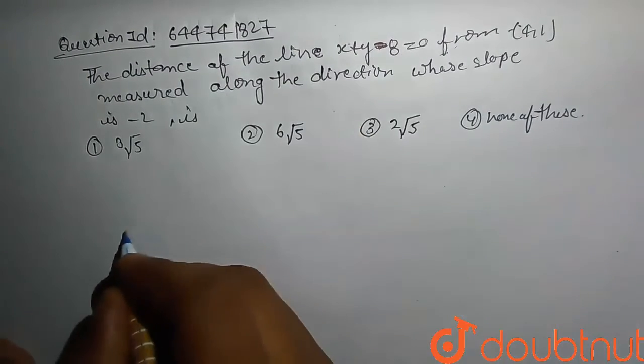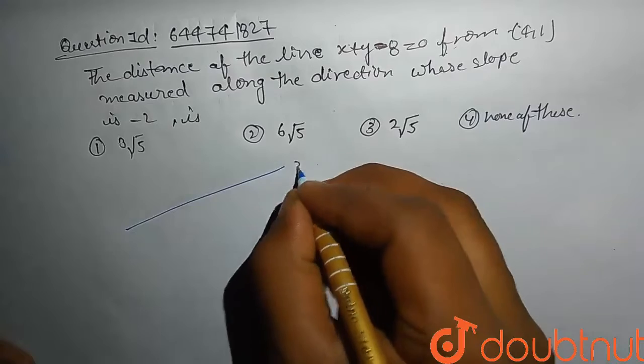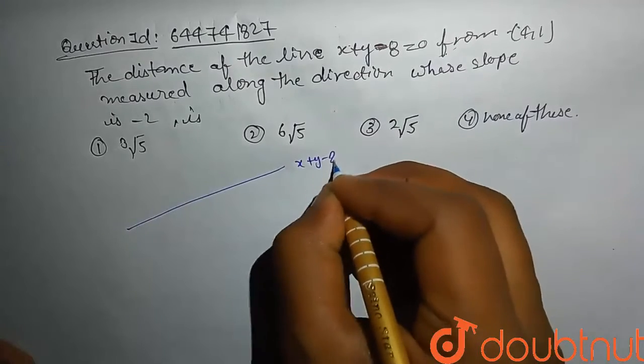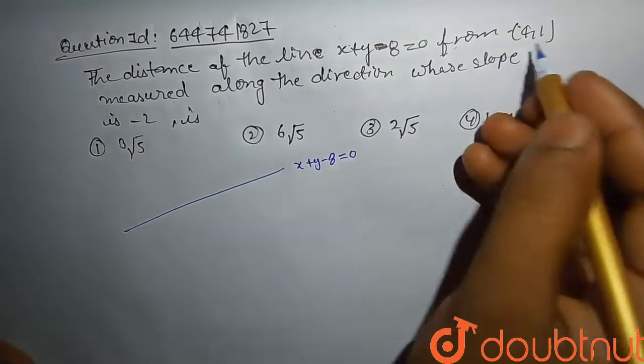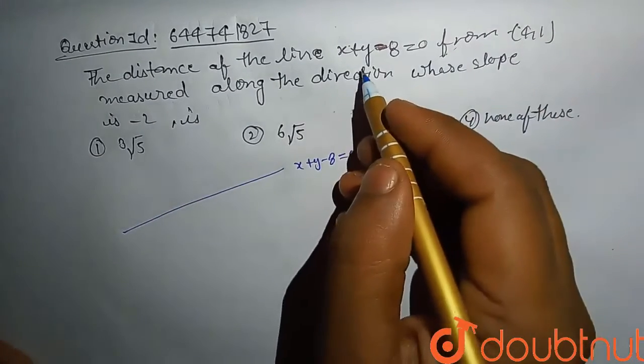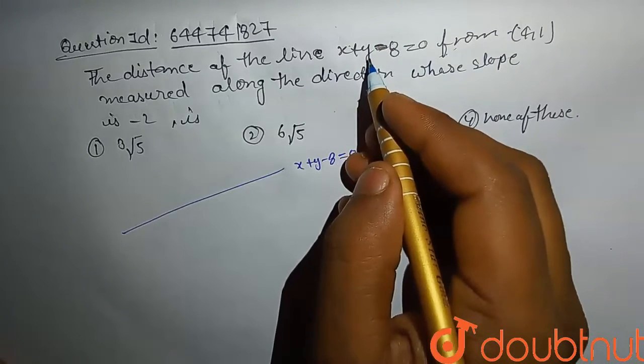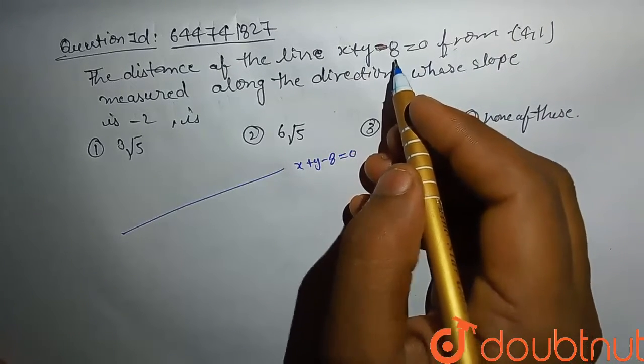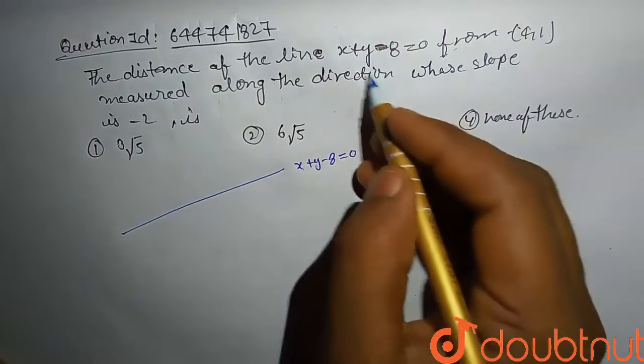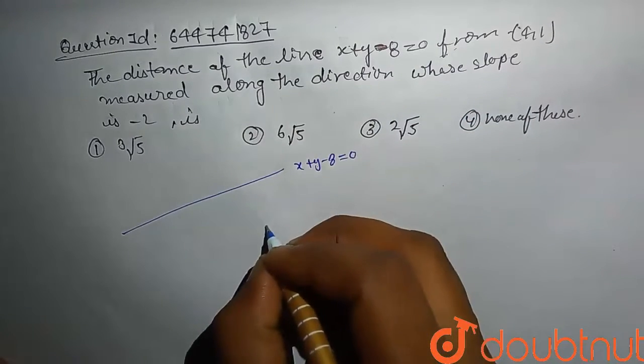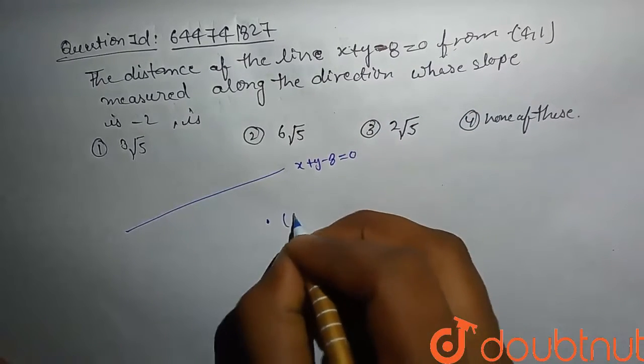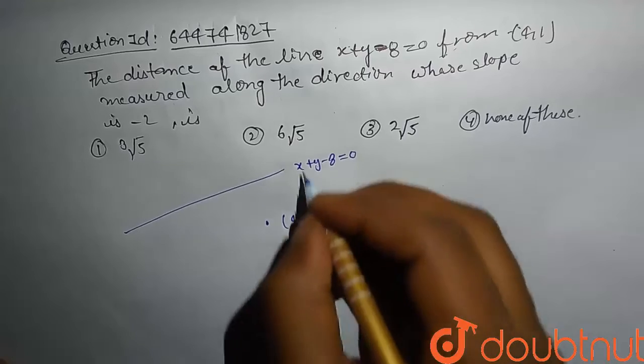Let's first draw this line. We assume this line is x plus y minus 8 equals 0. We check if the point lies on the line: 4 plus 1 is 5, minus 8 is minus 3. That point does not satisfy this line, means that point is outside that line. This is (4,1).